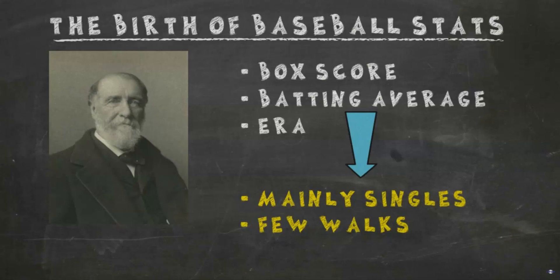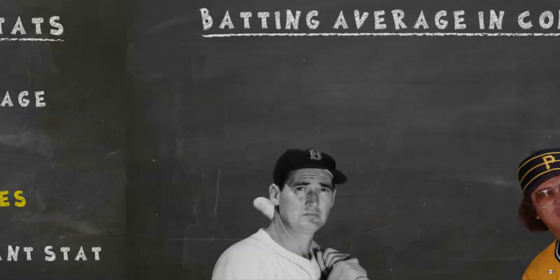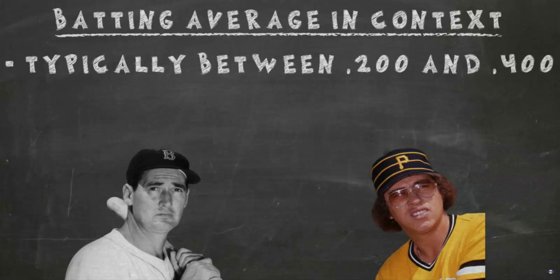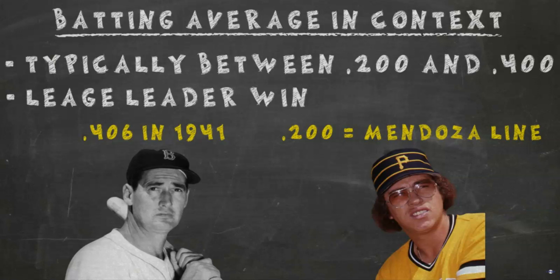Before talking about batting average in today's world — a quick tangent. Generally speaking, a player's batting average for the season will be anywhere between .200 and .400. 1941 was the last time someone batted over .400, as Ted Williams batted .406. A batting average below .200 is said to be below the Mendoza line, named after light-hitting shortstop Mario Mendoza, who actually batted .215 for his career. Also, anyone who leads their league in batting average wins the batting title and is considered the batting champion.